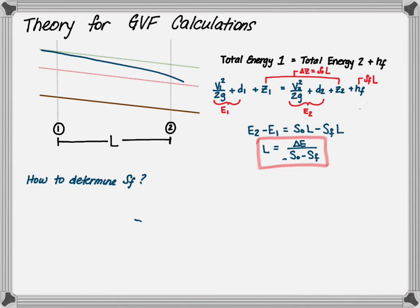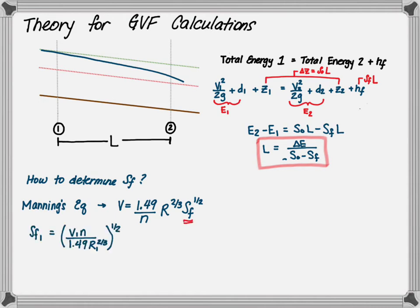How do we find friction slope? We use Manning's equation by removing the area and substituting velocity. Inside Manning's equation, we have friction slope. We solve for the friction slope at point 1 and point 2, then take an average of those friction slopes. Now we have all the information to calculate the length.